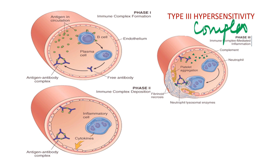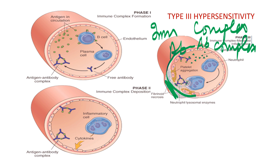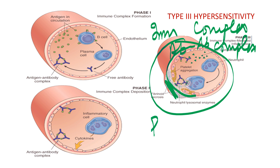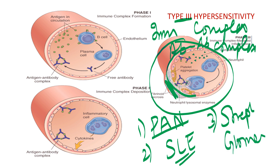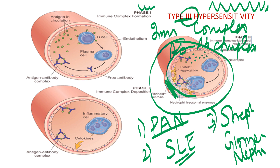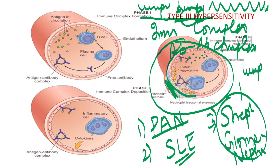Type 3 is complex mediated — immune complex or antigen-antibody complex has already formed and gets deposited at the site, causing lysis or destruction. You can remember three-letter diseases because it is a type 3 reaction: PAN and SLE. Another example is streptococcal glomerulonephritis. Type 3 means it is not specific — it is lumpy-bumpy. In post-streptococcal glomerulonephritis, there will be a lumpy-bumpy appearance on immunofluorescence.